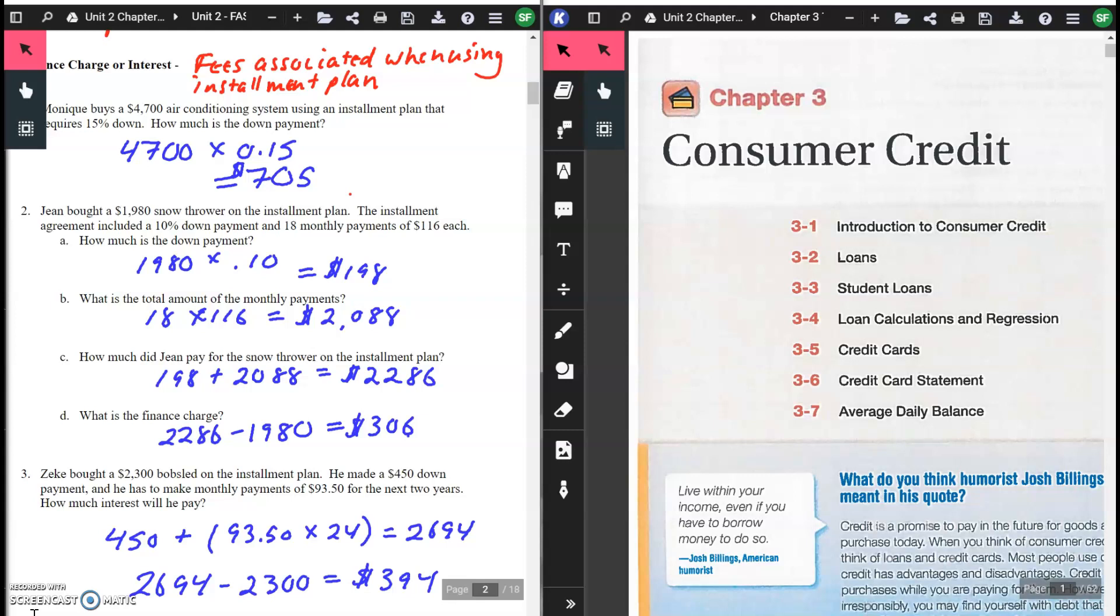How much did Gene pay for the snow thrower on the installment plan? You take your down payment of $198 plus your total amount in monthly payments of $2,088 equals $2,286. What was the finance charge? You take your $2,286, how much you paid at the end, minus how much it actually sold for, which is $1,980, gives you a finance charge of $306.